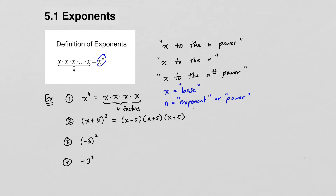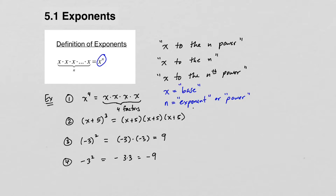The last two examples point out an important difference when using parentheses versus not using parentheses. For (-3) quantity to the second power, that means negative 3 times negative 3, which is positive 9. For the last one, negative 3 to the second power — notice we do not have parentheses around the whole negative 3 — that means the exponent of 2 only applies to the 3 and not the negative sign. So the negative is still there, but 3 squared is just 3 times 3, and this is negative 9. With exponents, parentheses really matter.